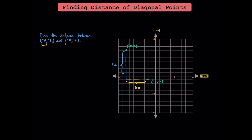To get the horizontal distance, we can use the x-coordinates of the ordered pairs. Since negative 2 and negative 8 are in the same quadrant, we can subtract their absolute values. The absolute value of negative 8 is positive 8, and the absolute value of negative 2 is positive 2 — 8 minus 2 is 6. For the vertical distance, since they're in different quadrants, we add their absolute values. The absolute value of negative 1 is 1, and the absolute value of 7 is 7 — 1 plus 7 is 8 units.